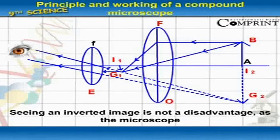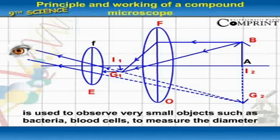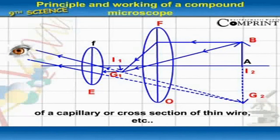Seeing an inverted image is not a disadvantage as the microscope is used to observe very small objects such as bacteria, blood cells, to measure the diameter of a capillary or cross section of a thin wire, etc.